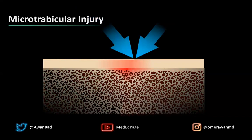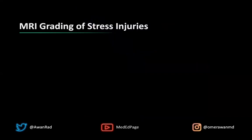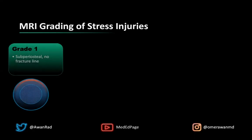With continued forces, you eventually break the bone — resulting in a microtrabecular fracture or discrete fracture in the underlying bone. It's also important to understand that there is a grading system for stress injuries on MRI: grade one, grade two, grade three, or grade four — and they are different.